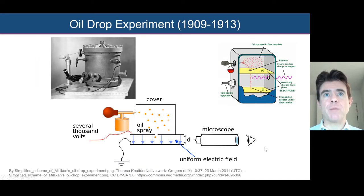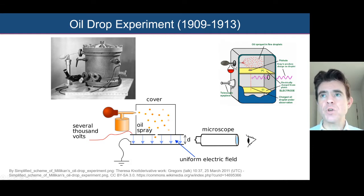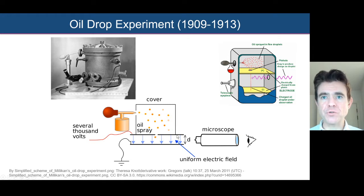So this is the basic apparatus. We have this chamber, and oil is sprayed into the top part of the chamber. Here's the oil in this container, and it's sprayed using an atomizer, because it gives a very fine vapor of oil particles that are sprayed into the top part of that chamber. Some of these oil drops will pass through a hole at the bottom of the chamber.